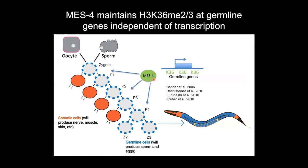The answer comes from two beautiful back-to-back papers from Susan Strom and Bill Kelly's lab in 2010: the maternal deposition of MES4, an H3K36 methyltransferase. MES4 is deposited into the oocyte like SPR5 and MET2, but it does a different job. It recognizes H3K36 laid down in the parents and maintains H3K36 at a subset of germline genes — we think of this as bookmarking these genes. This prevents them from being shut down by SPR5 and MET2. When you lose MES4, you don't get a germline.